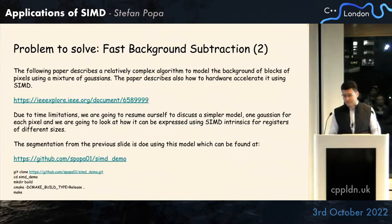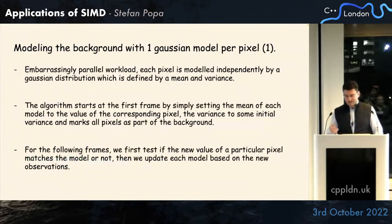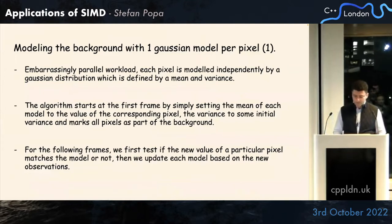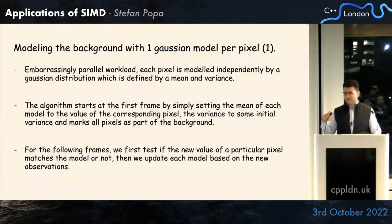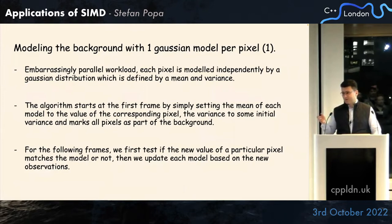Due to the restrictions in time, I'm just going to present something a lot simpler. So instead of modeling background using mixtures of Gaussians, I'm just going to use one distribution to model each pixel. It's an embarrassingly parallel workload — each pixel is modeled independently by a distribution defined by two values: the mean and variance. The algorithm starts with the first frame, setting the mean to the value of the pixel and the variance to some initial magic value. For the following frames, we simply decide if the pixel belongs to the foreground or background and then update the model.